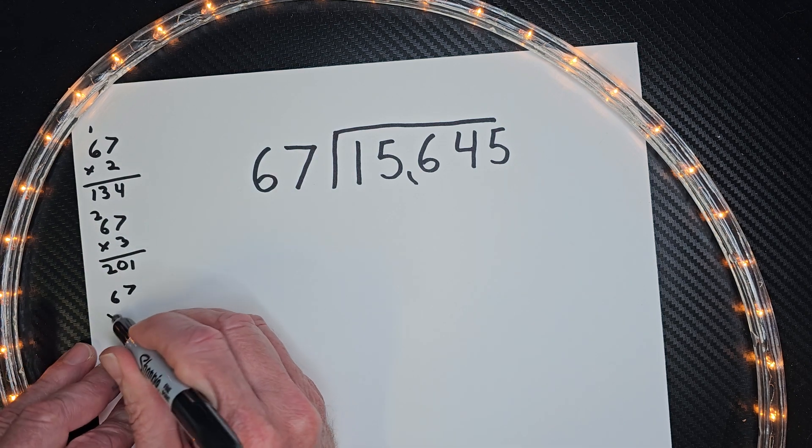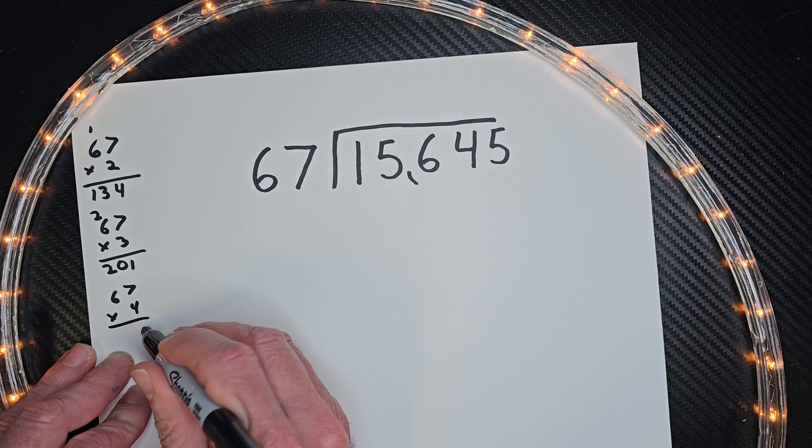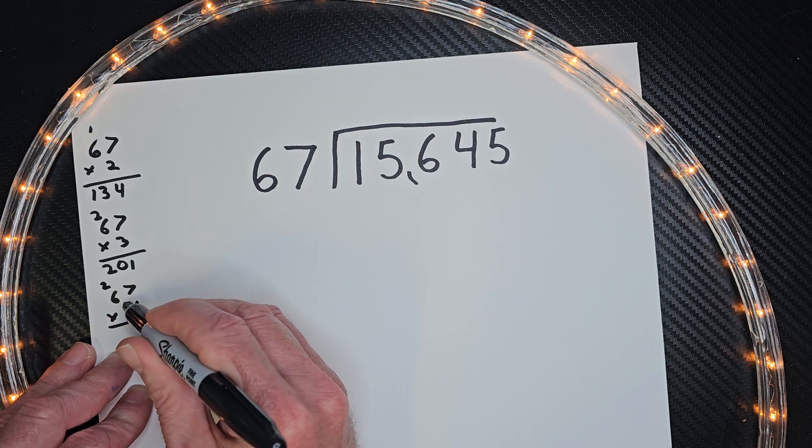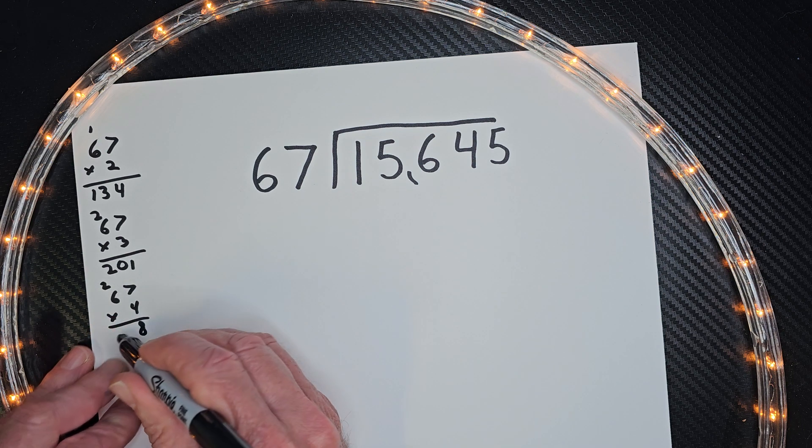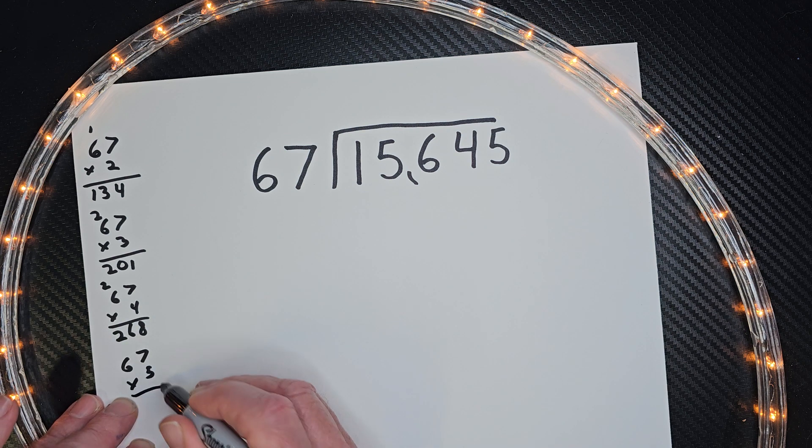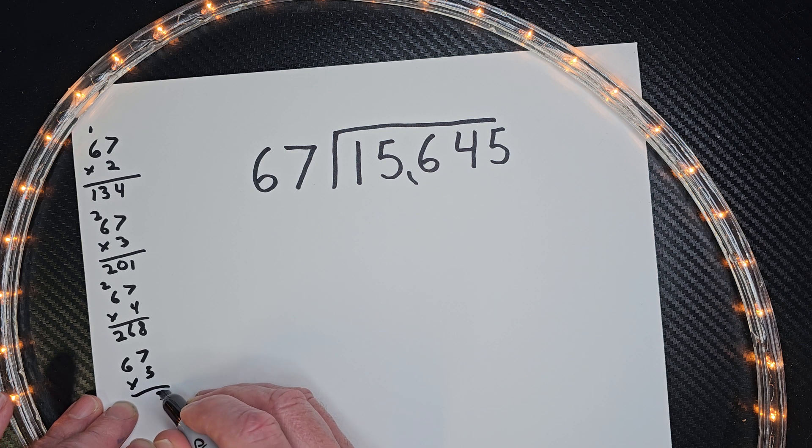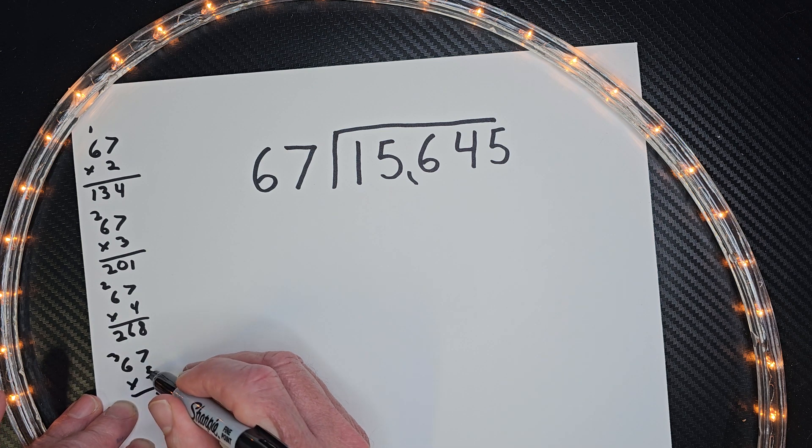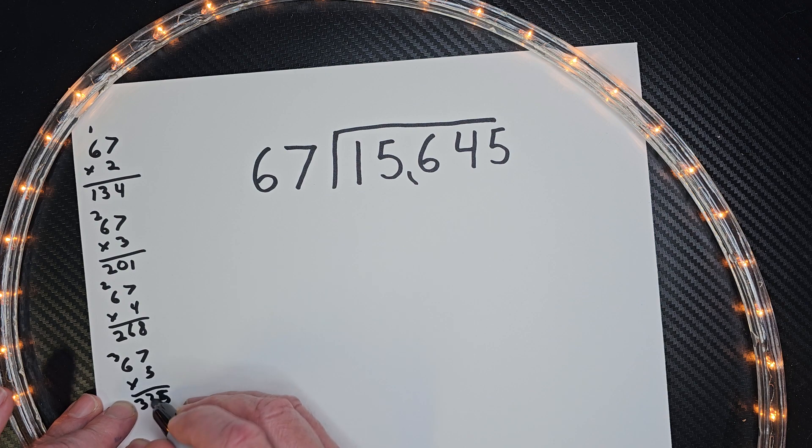67 times 4. 7 times 4 is 28. Put the 2 up here. 6 times 4 is 24, 25, 26. Let's do one more. 67 times 5. 7 times 5 is 35. 5. Put the 3 up there. 6 times 5 is 30, and that would be 33.